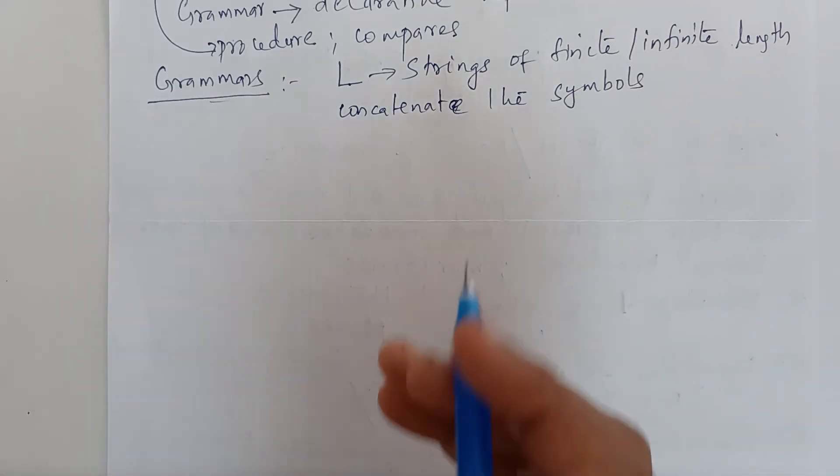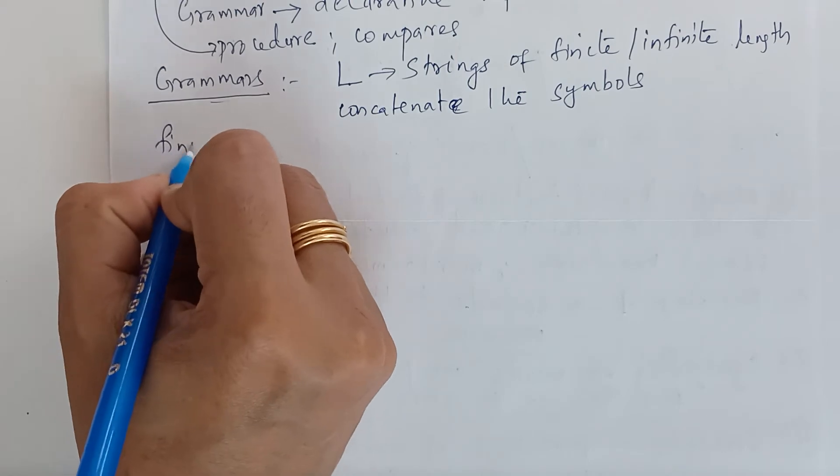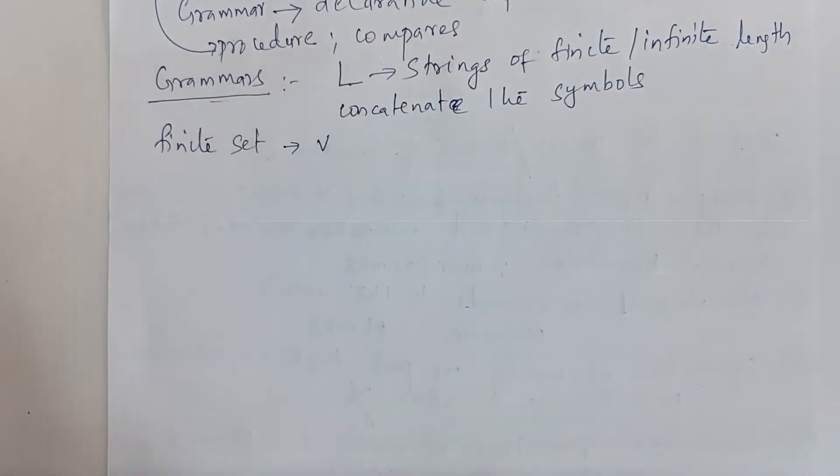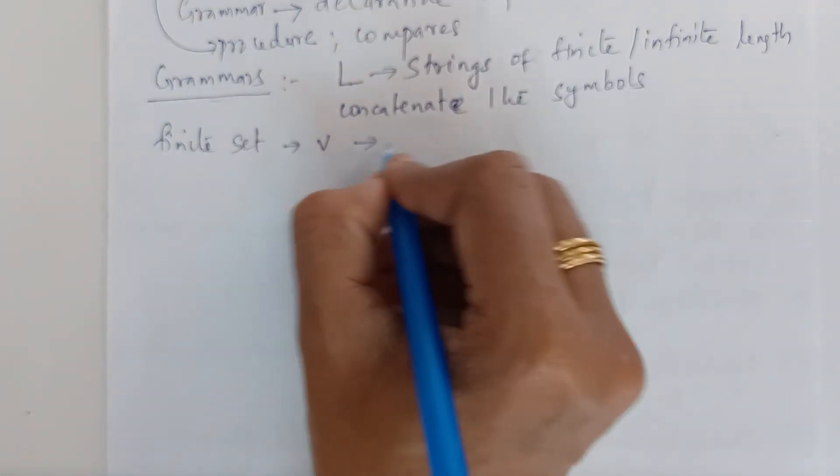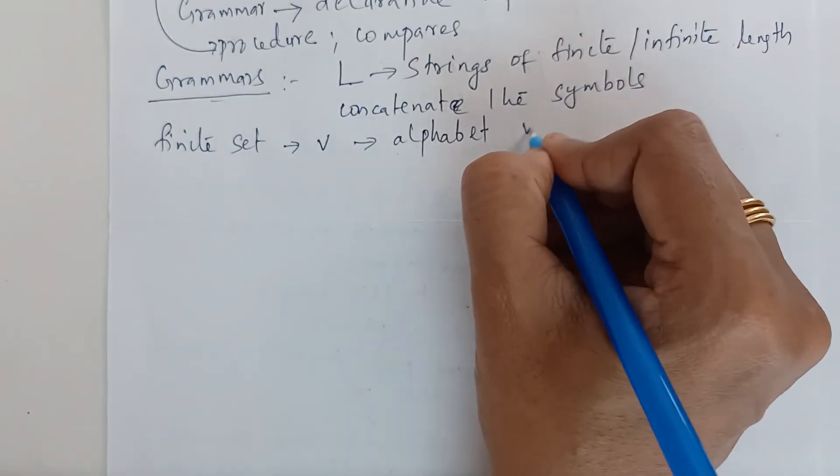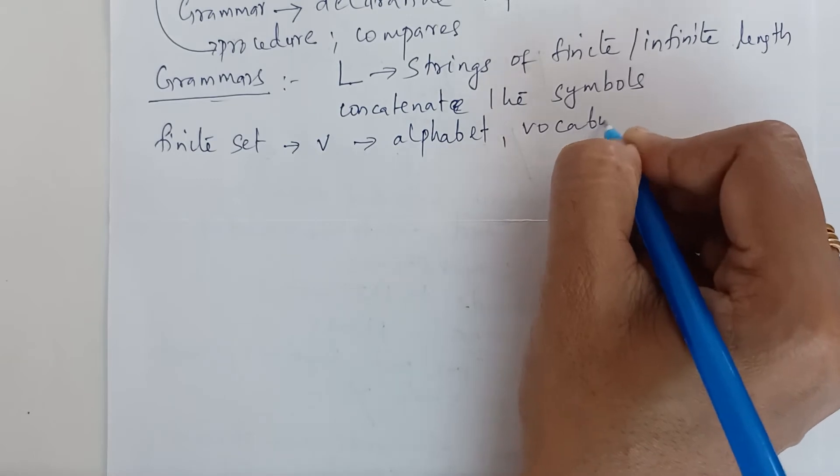There will be a finite set of symbols. Let us denote by letter V the finite set of symbols of the language. They are known as alphabet or vocabulary.